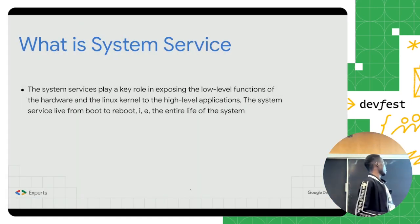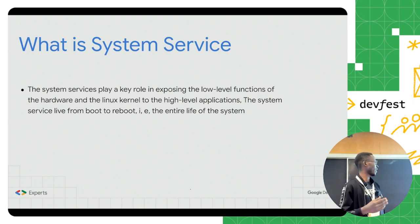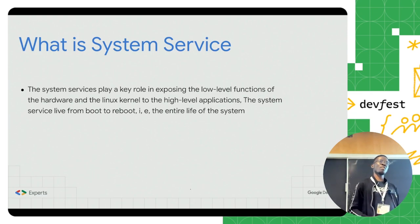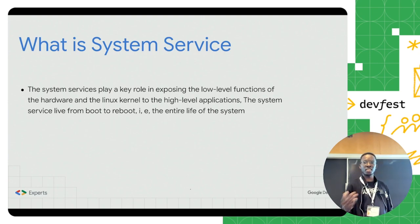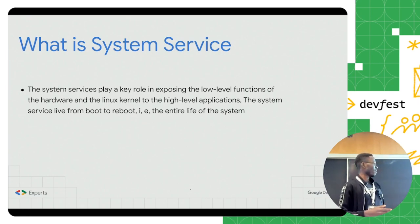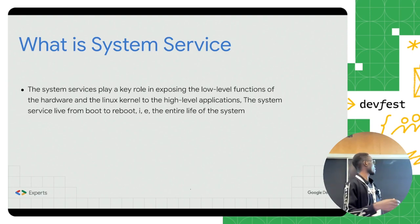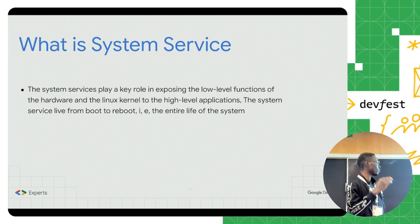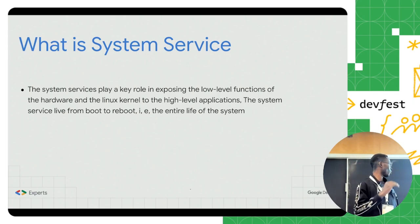The system service is basically a component or a set of components that allow providing features related to the device to the top-level layer. For example, your Android phone may have NFC, cameras, and other hardware. Your application can access all those features even though most of the time those features are written in C or C++, the low-level programming language. Every time we send a notification or play sound using the speaker, we just call some Java or Kotlin API. The system service helps provide those low-level features at the top level of the system architecture.